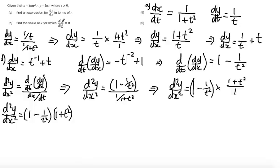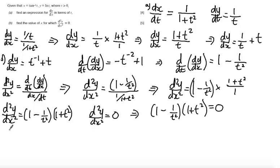So now I want to solve this for when is d2y by dx squared equal to 0. Just remember to state d2y by dx squared equals 0 so that we set up an equation to solve. So I get 1 minus 1 over t squared times 1 plus t squared is equal to 0. Now this is a little bit like a quadratic. I could say 1 plus t squared is equal to 0.